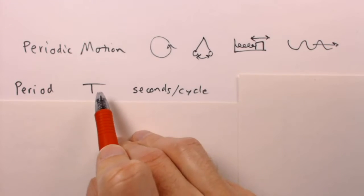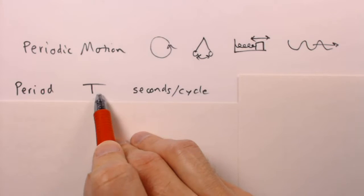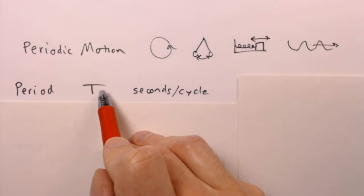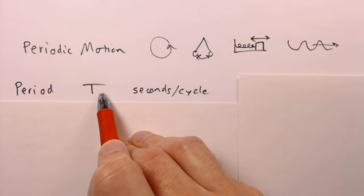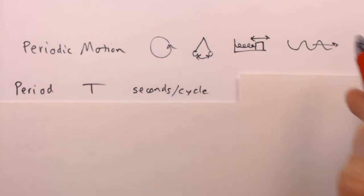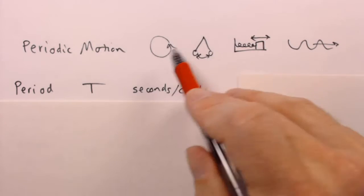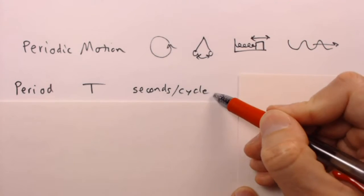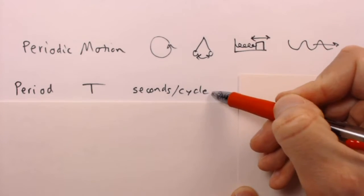Period is usually indicated by the letter capital T. Sometimes they use a P, but usually it's a T because period means time period. It's the amount of time it takes to complete one motion of whatever type you're talking about. These motions come in various varieties, but we refer to all of them by the term cycle. One complete motion is a cycle.